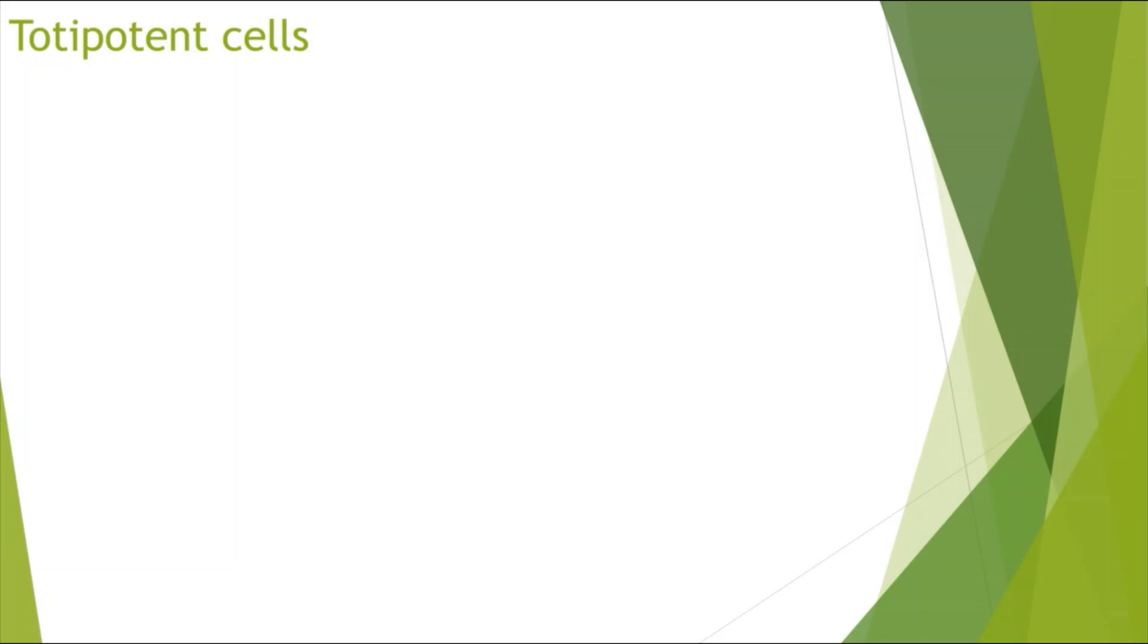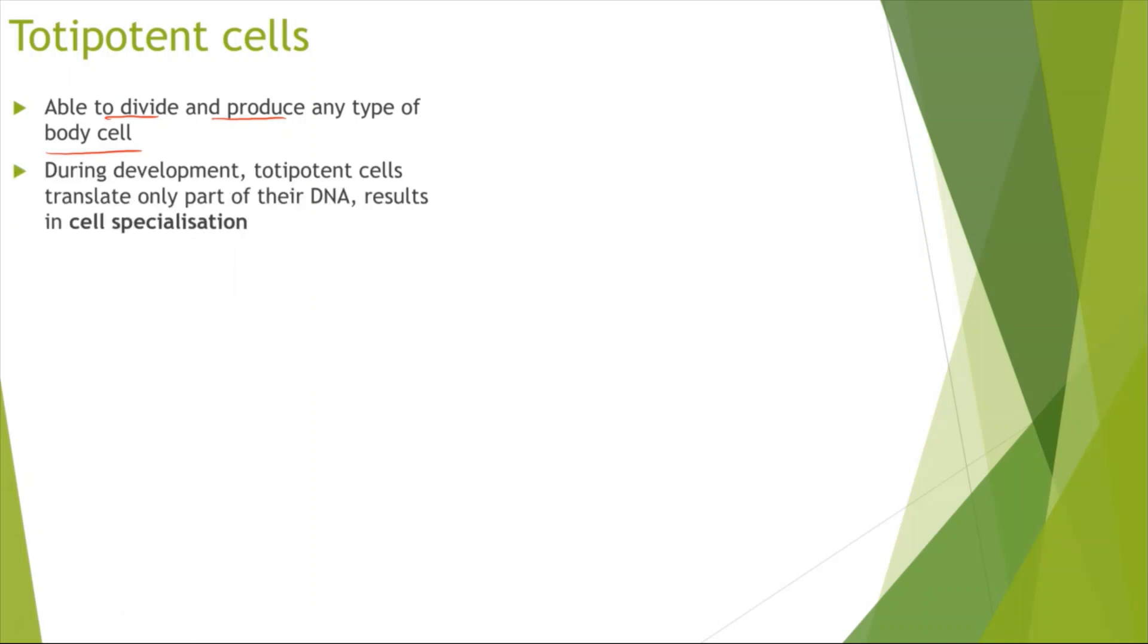Alright, so first looking at totipotent stem cells. So totipotent stem cells are able to divide and produce any type of body cell. They are quite useful as they can form any type of specialized cell later on which not all of the stem cells can do. Okay, so how do these totipotent stem cells form any body cell? Now during development of these body cells, the totipotent stem cells can translate only part of their DNA which can lead to cell specialization. Now there's so many students who don't understand how cell specialization works, so I'm going to be looking at this in more detail now.